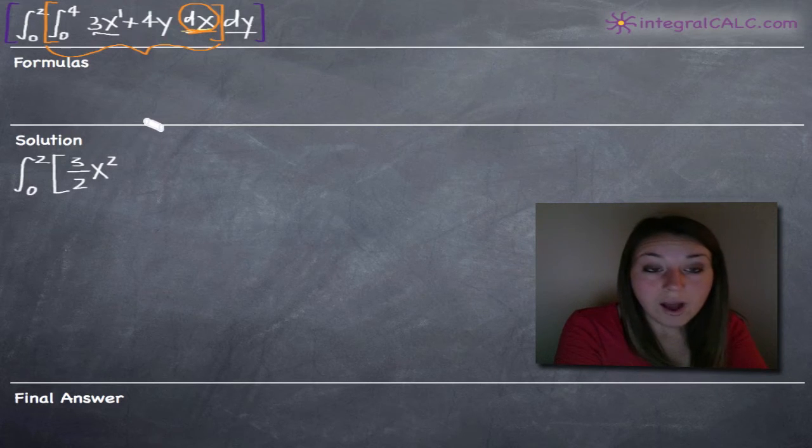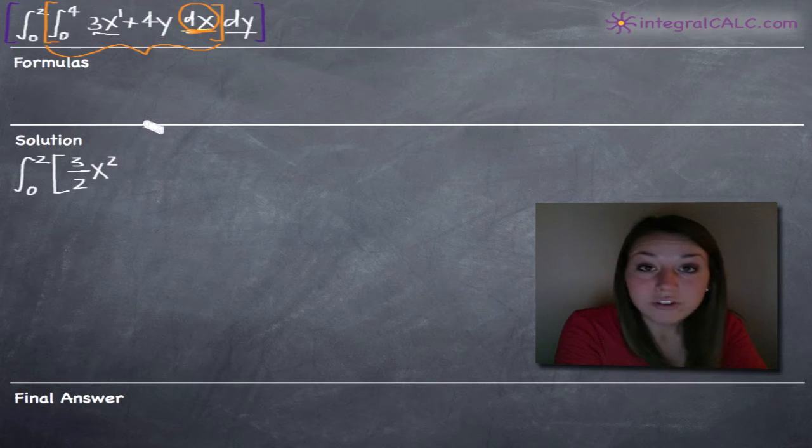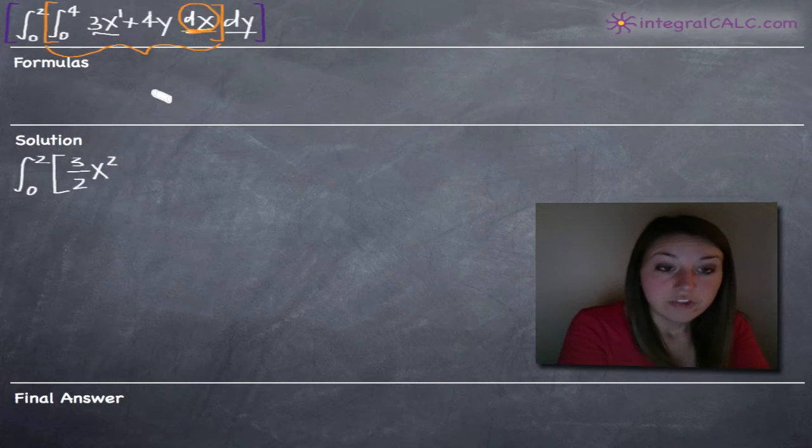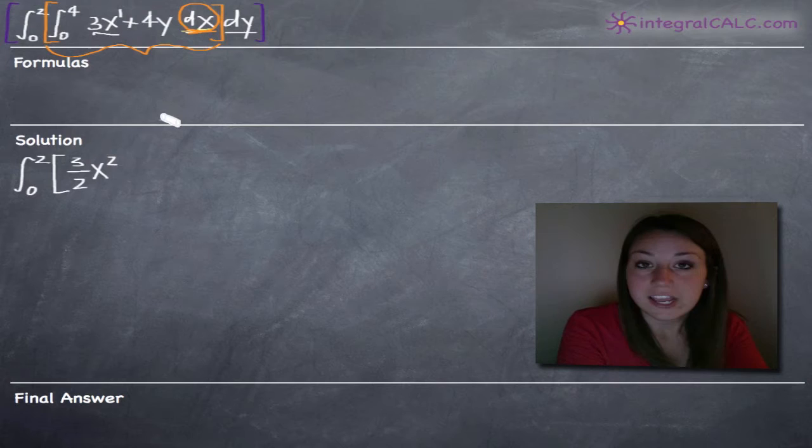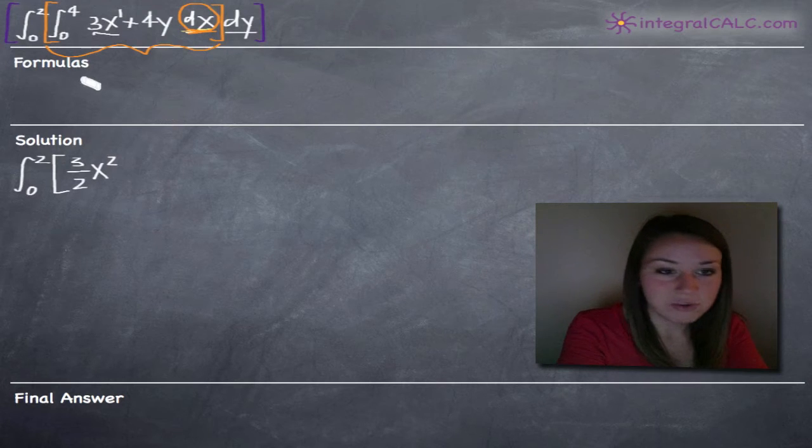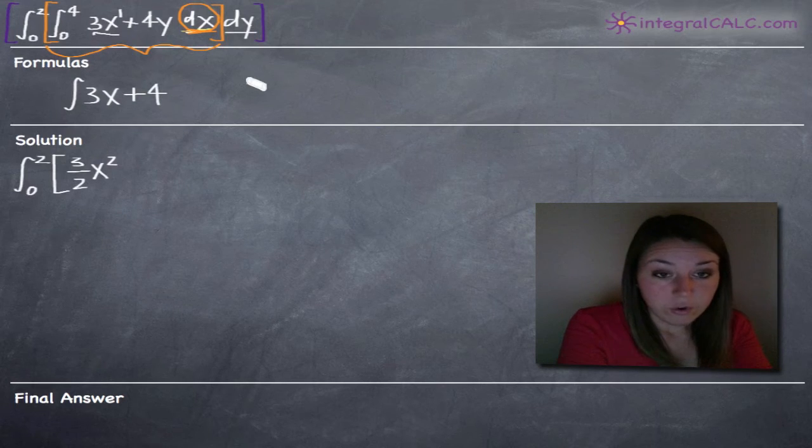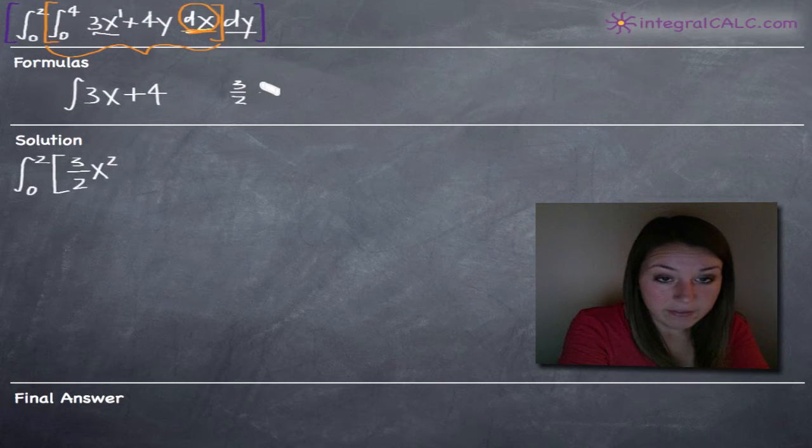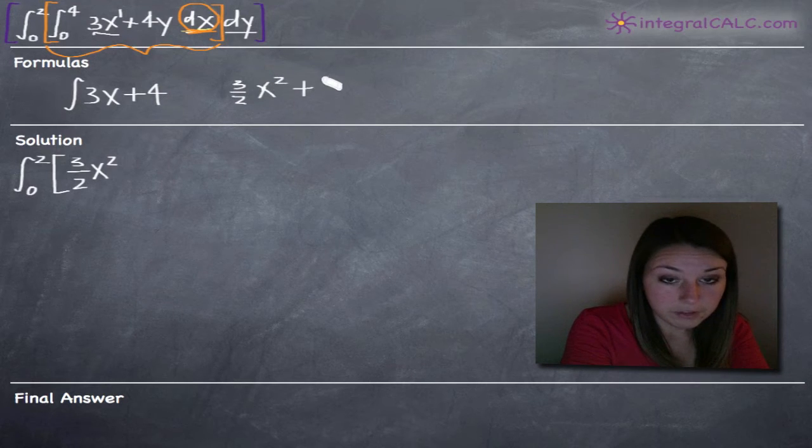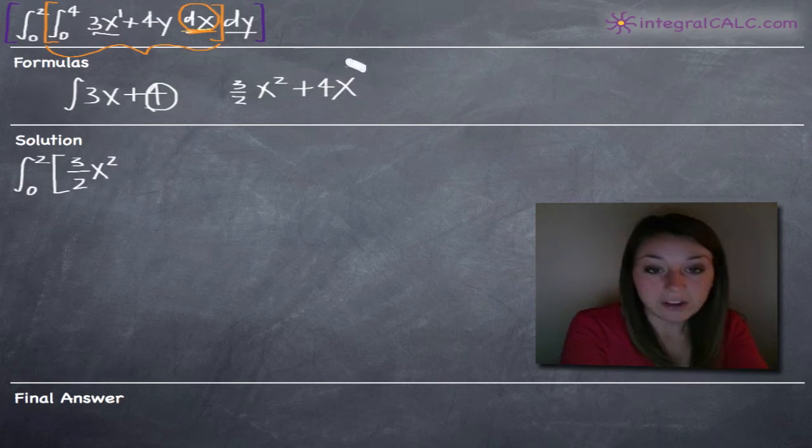Taking the integral of 4y with respect to x is a little bit trickier but not too bad. So remember that if we're just taking a normal integral, the most basic integral you can think of and you've got, say we have like 3x plus 4, the integral would be 3 halves x squared plus 4x because this 4 here is a constant and we would just tack on the x variable to the constant.